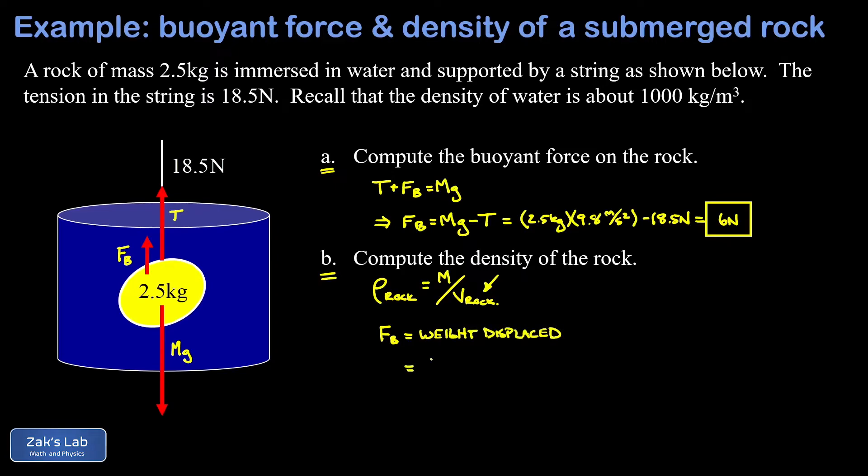Again, quoting Archimedes' principle: the buoyant force is the weight of displaced fluid. We need the mass of the water that's been pushed out of the way as the rock submerged. The volume of water that got pushed out of the way is equal to the volume of the rock. If we multiply that by the density of the water (rho H2O), that gives us the mass of the water that's been pushed out, because density times volume gives you mass.